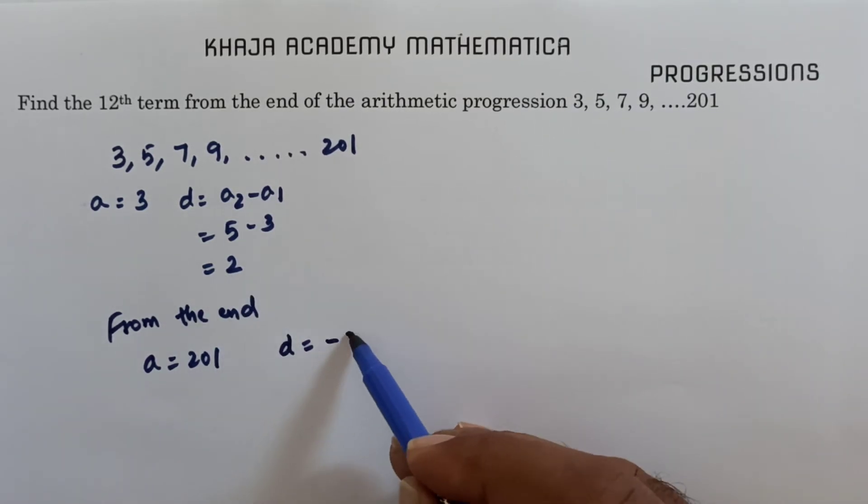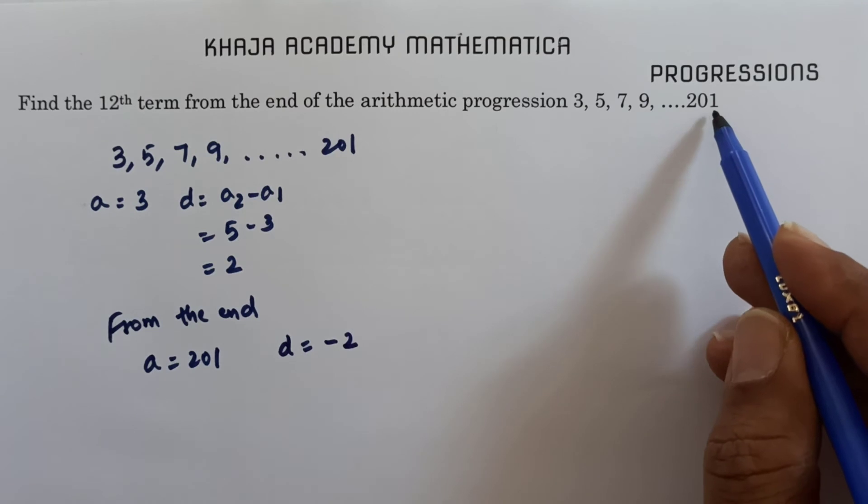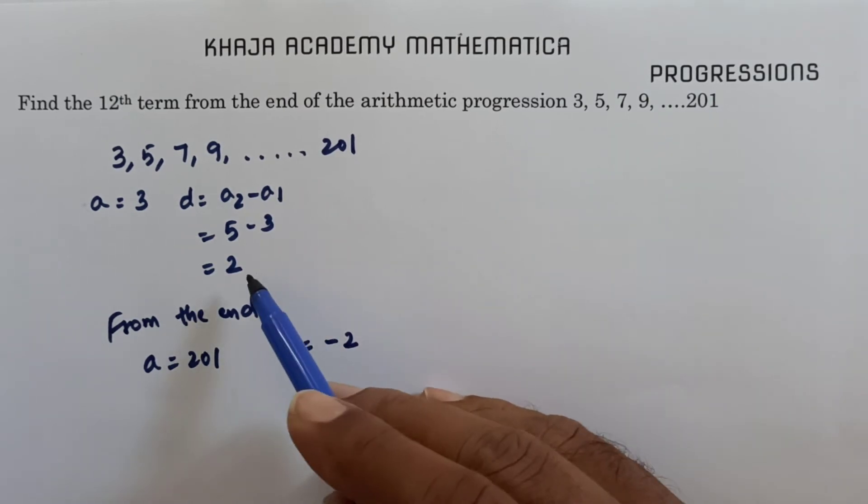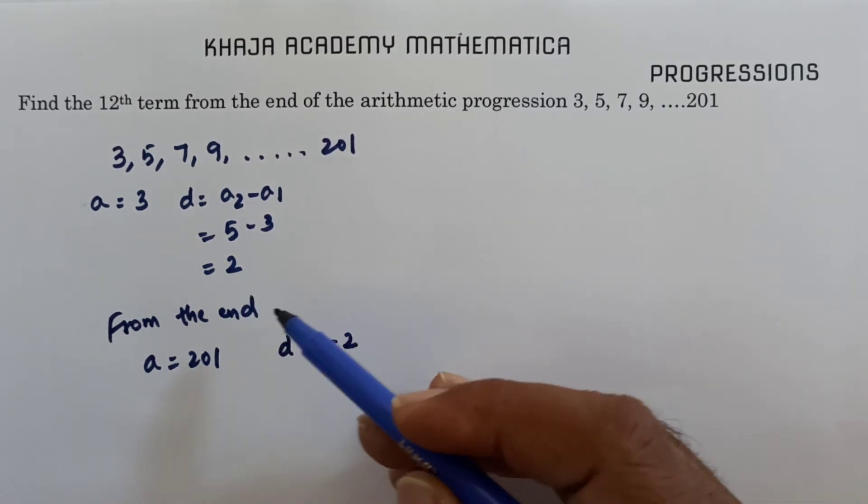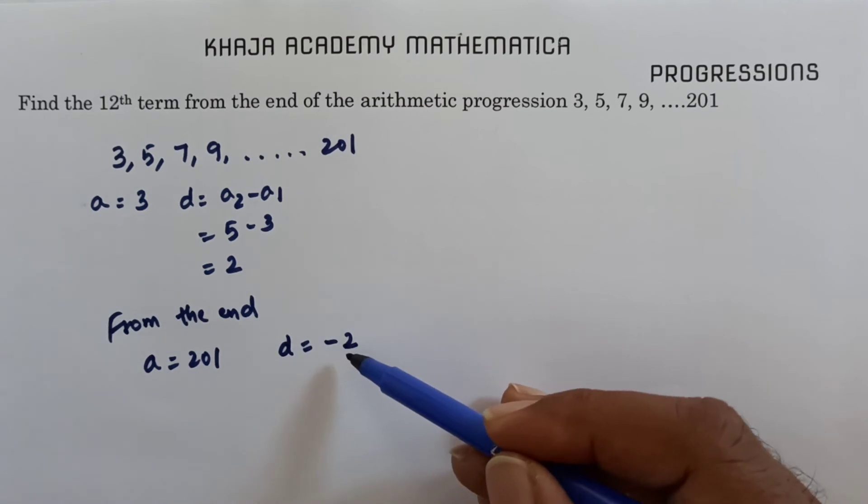When you come in reverse order, it will be minus 2. If it is minus here, it will be plus, but here it is plus, so here the common difference will be minus 2.